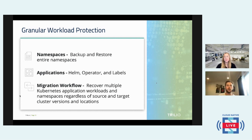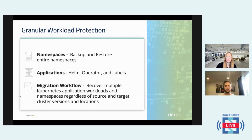The last piece of granular workload protection is the migration workflow. With Trilio, we've designed a disaster recovery and migration tool to quickly pull applications from one cluster into another. You perform that migration through your target — your S3 bucket or NFS storage. You do a capture of a backup of an application running in the core, that backup is stored on your S3 or NFS, and then you recover it to your K3S edge cluster — which is actually the demo we're going to be doing today.